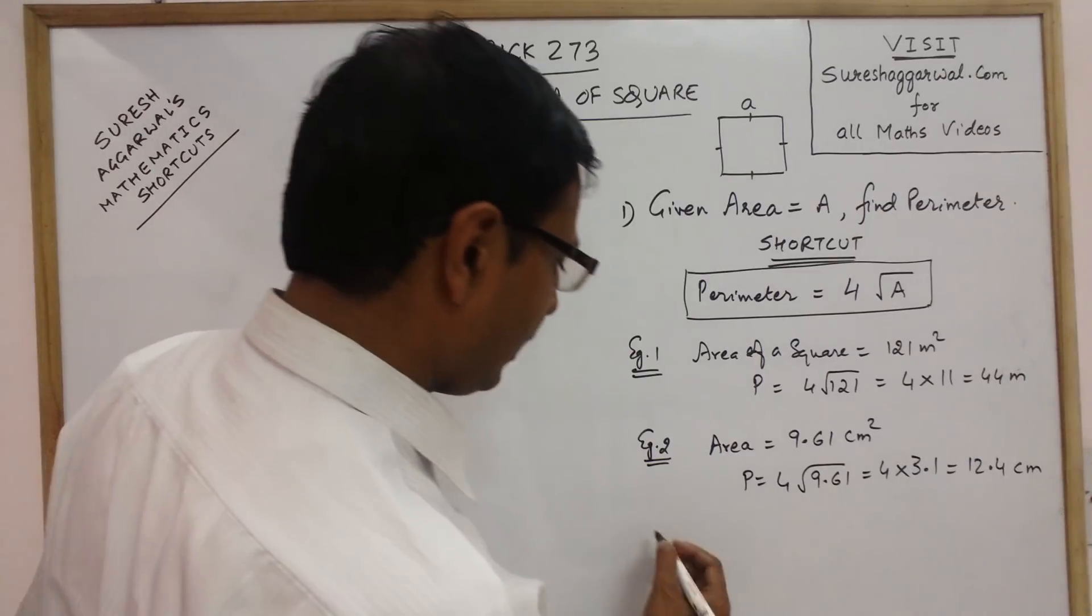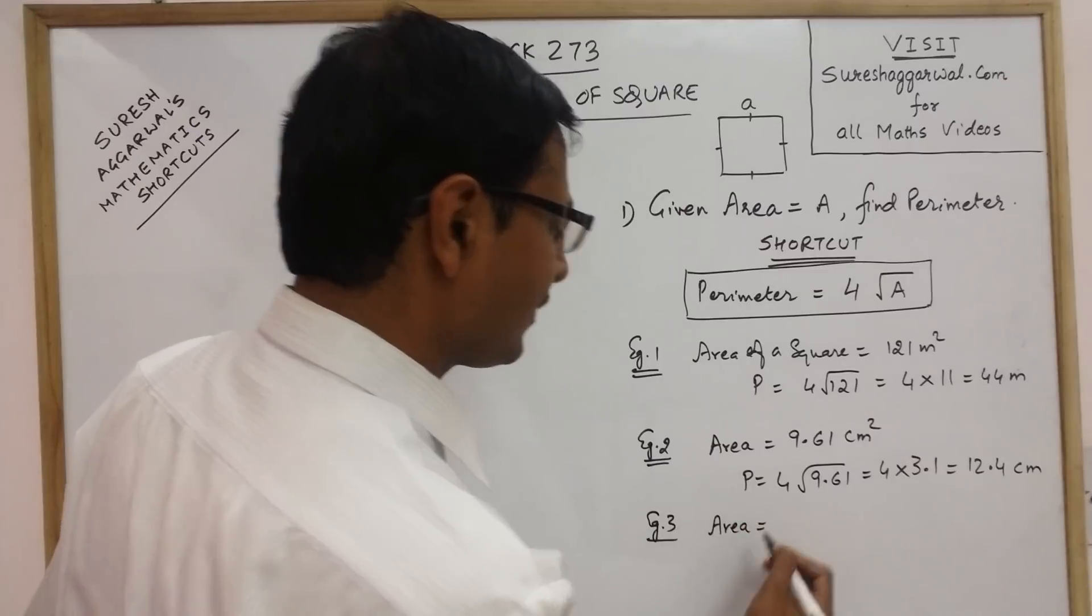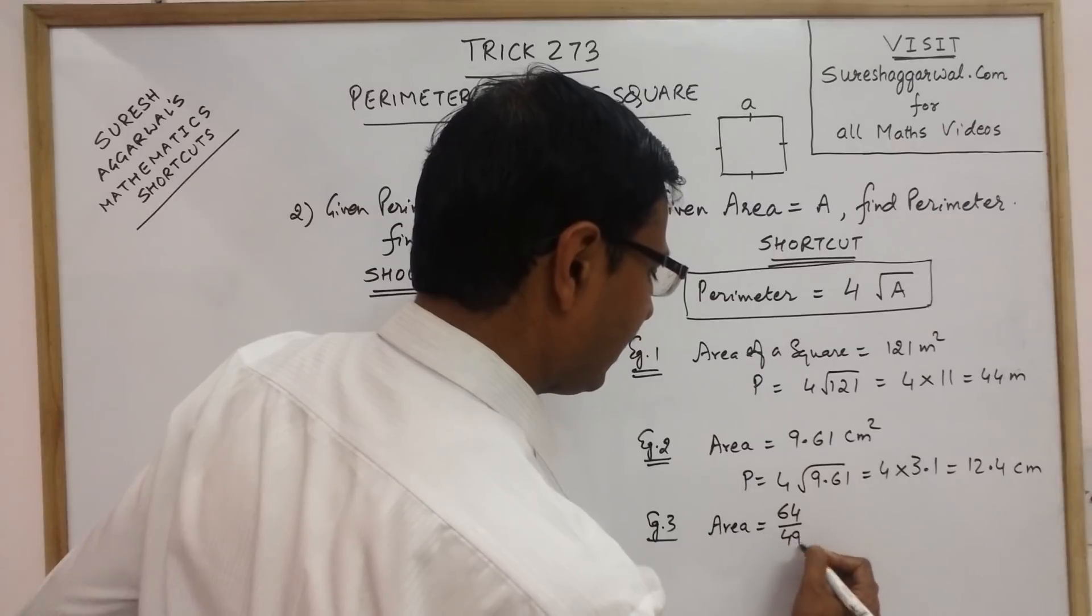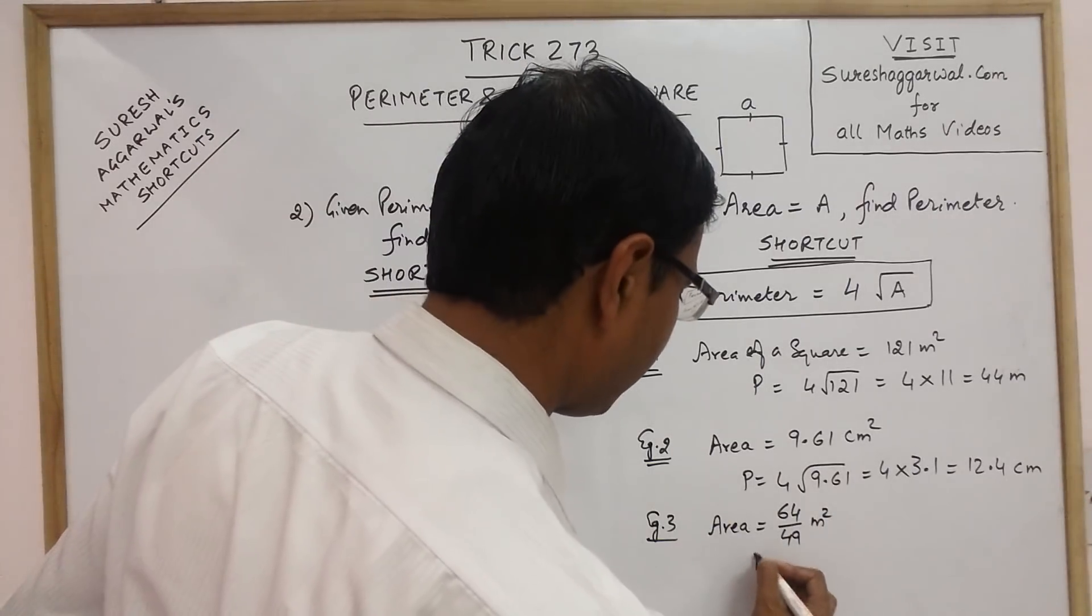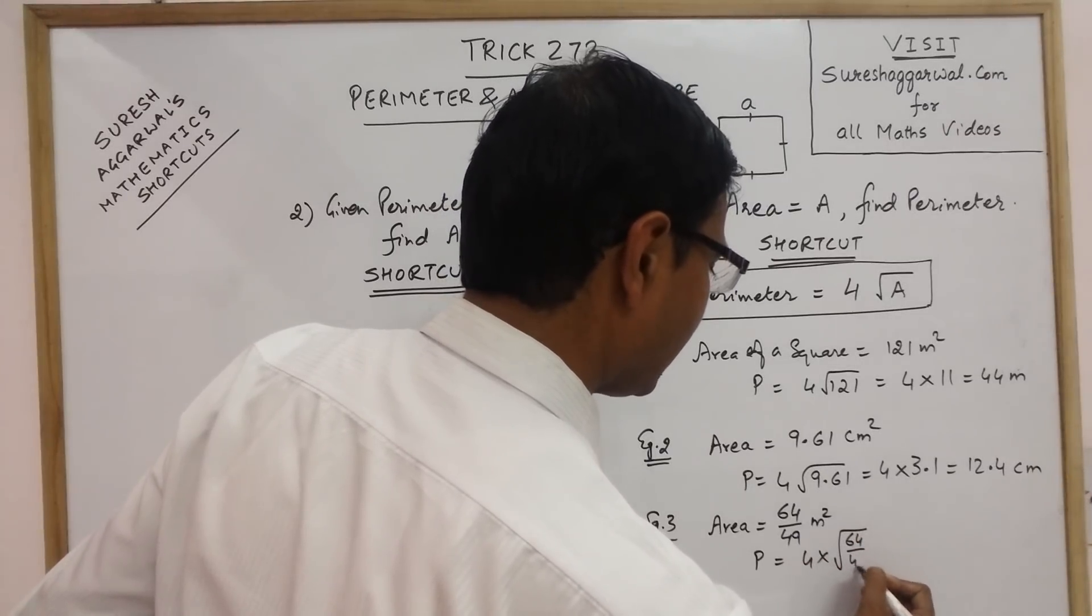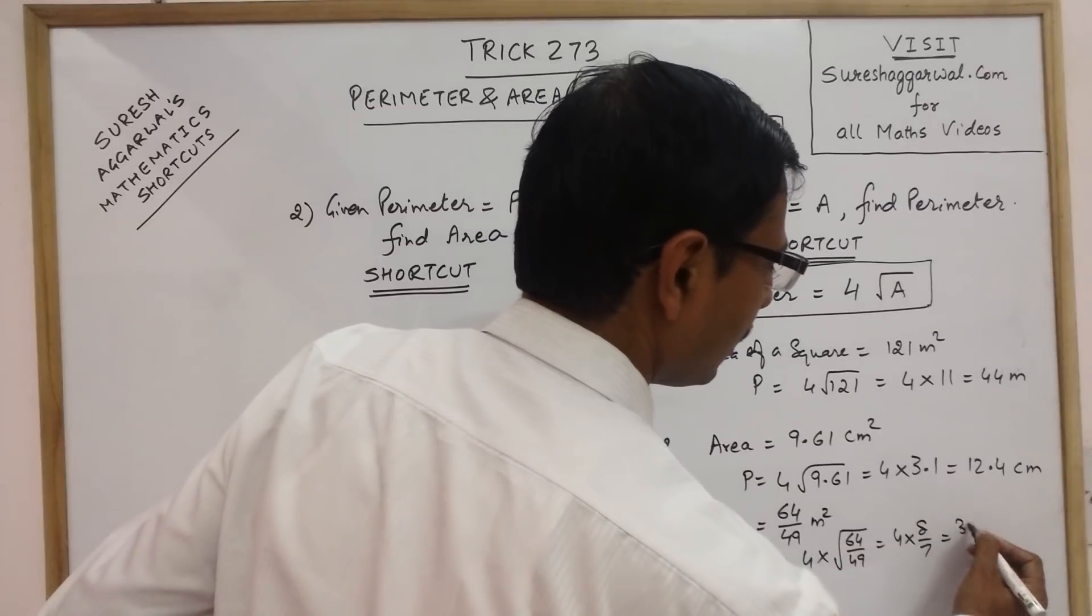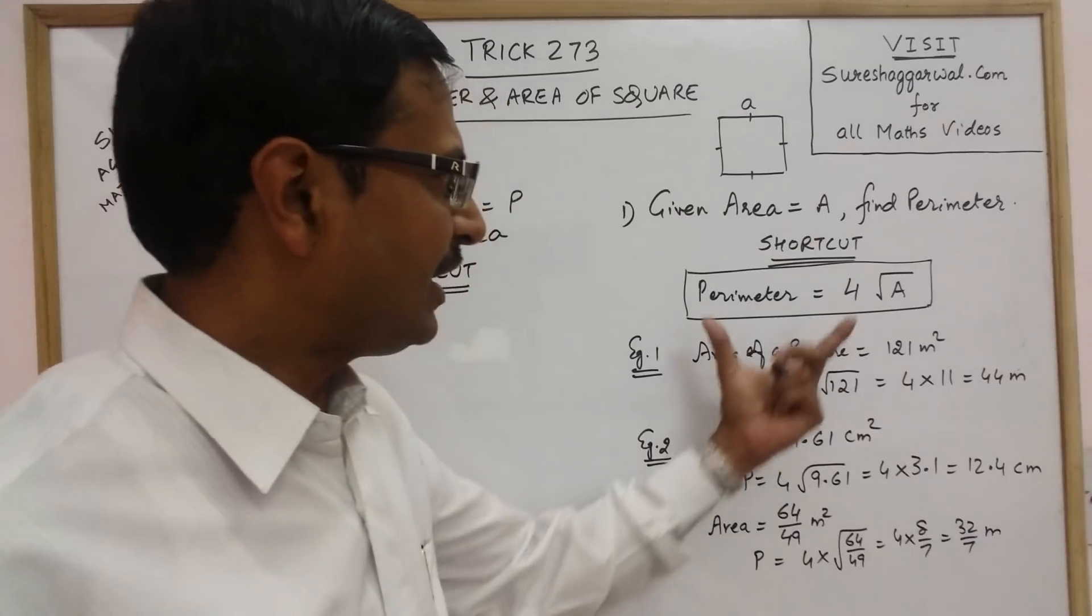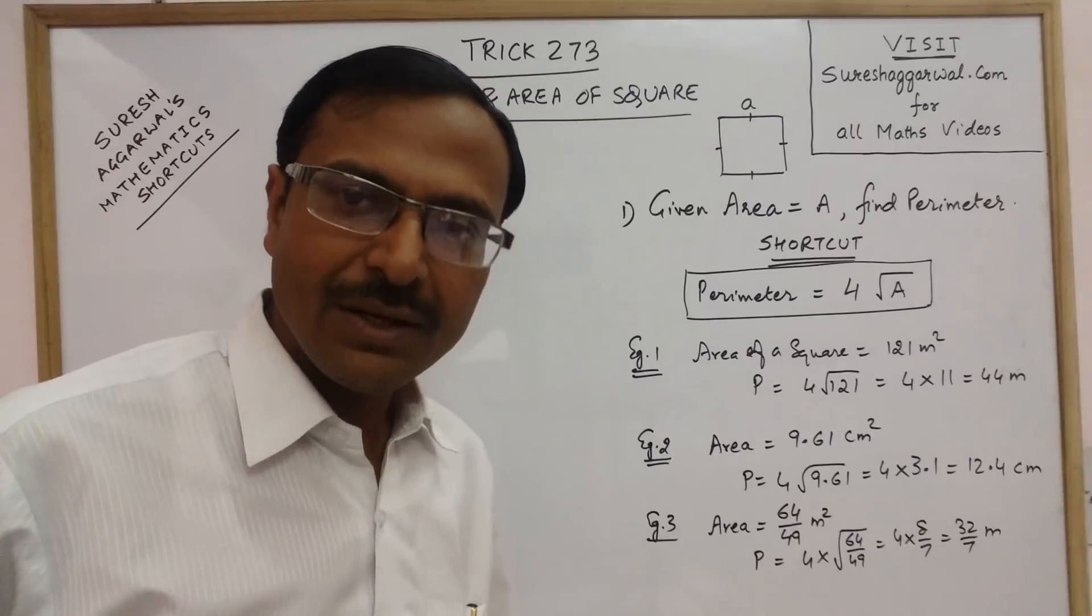Likewise, you can have one more example wherein you are given area in fractions. We will have a perfect square here to understand. We have 64 upon 49 meter square. Now we need to find the perimeter. Again, perimeter is 4 times the square root of 64 upon 49. So 4 times 8 upon 7. So 32 upon 7 meter is the perimeter. Very easy and very crisp method through which you can find the perimeter using the area.